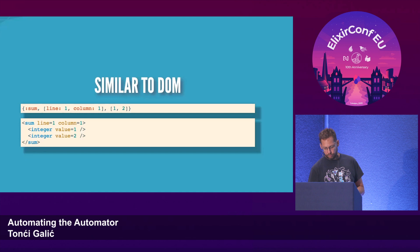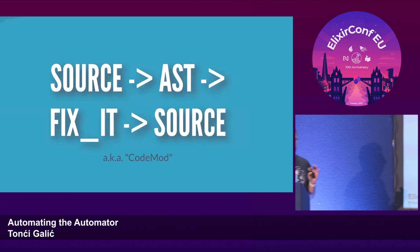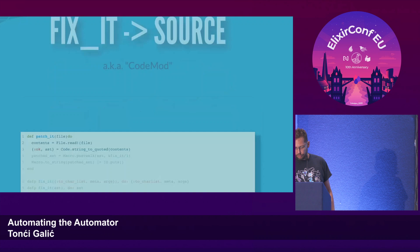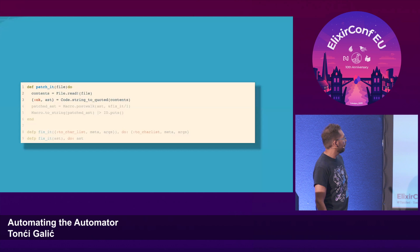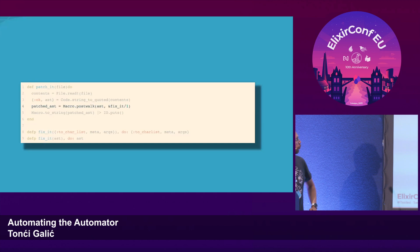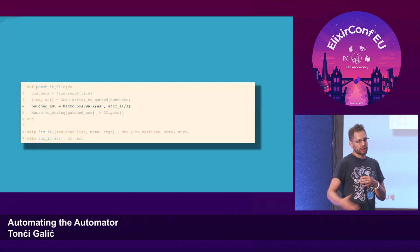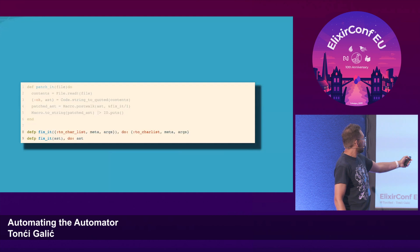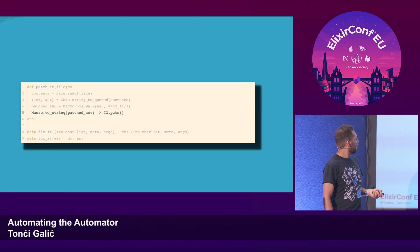The idea is to take the source code, parse it into an AST, change the AST, and go back to source code. In other communities like JavaScript, this is called a code mod. In code it would look like: we read the contents of a file, get the AST by parsing it, then change it — `Macro.postwalk` is a function just like `Enum.map` which walks our tree structure, passes it to a function, that function changes it, and you get a modified tree. We take `to_char_list`, transform it, and write it back to a file.